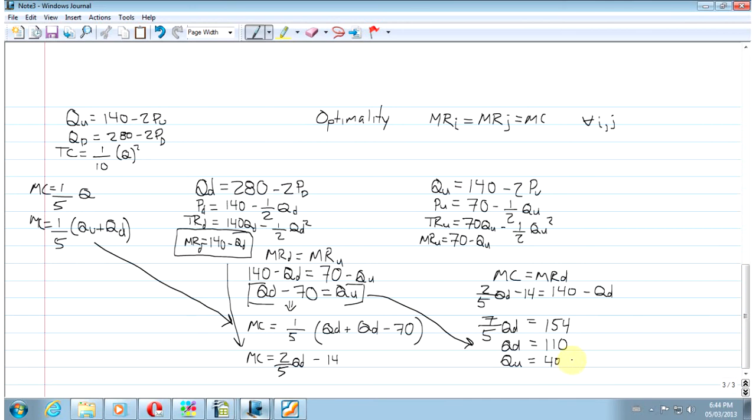Now all I need are prices. So I can take this quantity of Disney back into the Disney demand function. That is 140 minus 1 half Q_D. So P_D equals 140 minus 1 over 2 Q_D equals 95. And P_U equals 70 minus 1 half Q_U. And if Q_U is 40, then 70 minus 20 is 50.